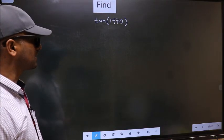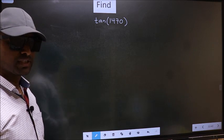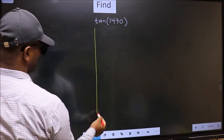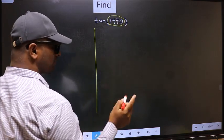Find tan 1470. To find this, we should follow this method. See, here we have 1470. Now you should check.